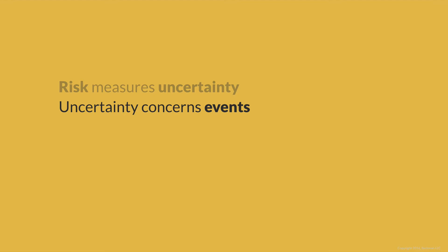Events can be actual or hypothetical, which means that we can be uncertain about the chances that an event will occur for hypothetical analysis. Or we can be uncertain about the effects of an event for actual events. Of course, we can and probably will be uncertain about both the likelihood and consequences for both hypothetical and actual events.